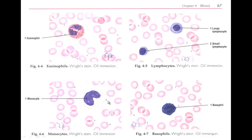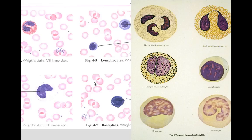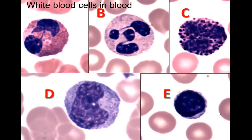The granules of the basophil are actually above the nucleus, impeding a clear view of it. We also see monocytes — a monocyte is a blood cell that eventually becomes a macrophage. At higher magnification in the drawing, we see the neutrophil with granules and a lobulated nucleus, eosinophil with big granules, basophil with big blue granules above the nucleus, lymphocyte, and monocytes.